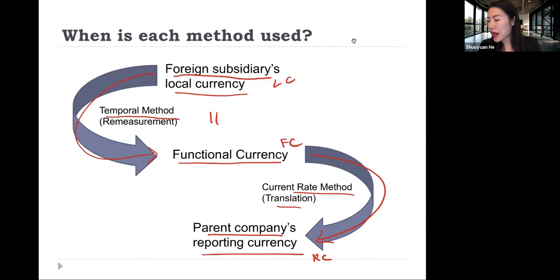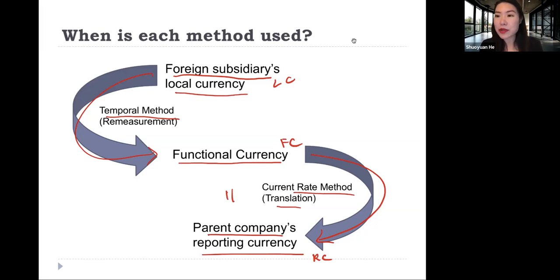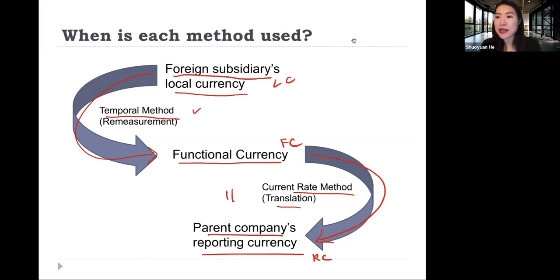The second possibility is when the functional currency is exactly the parent firm's reporting currency. In this situation, we don't need translation — we only need remeasurement, so only the temporal method is used.